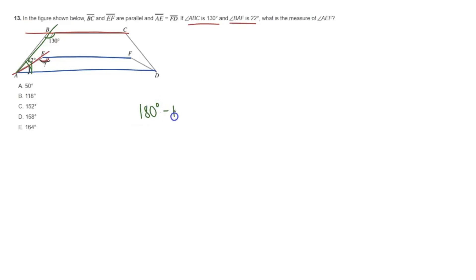So we have 180 degrees. We're going to subtract 130 degrees. That's going to give us 50 degrees. So what does this 50 degrees mean? Well, this means this right here, our angle BAD has to be 50 degrees. So let me just get rid of that. So we have 50 degrees.